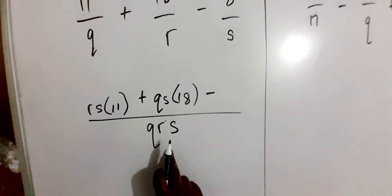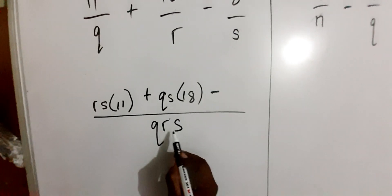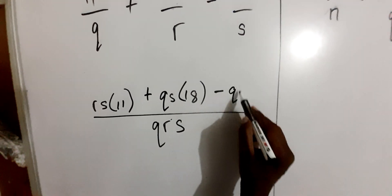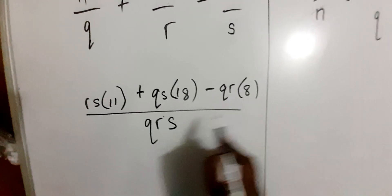then S into QRS, the S will cancel the S, leaving us with QR, so you can now say QR multiplied by 8. However,